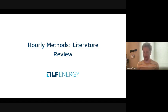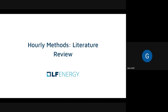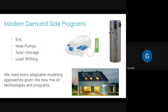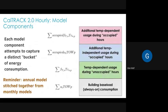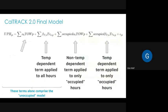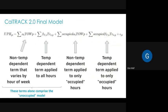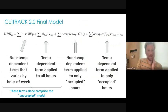Glenn from PG&E asked about the final model equation — specifically where the intercept is suppressed — noting the documentation never really explained the logic behind that. Adam explained: the non-temperature-dependent term and additional occupied term together effectively serve to establish an intercept — basically there's a different intercept for every hour of the week. So for Tuesday at 9 PM in an unoccupied building, the first term becomes the intercept, and then the temperature-dependent term applies on top of that.